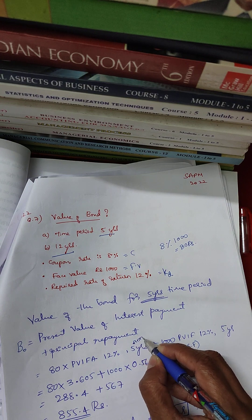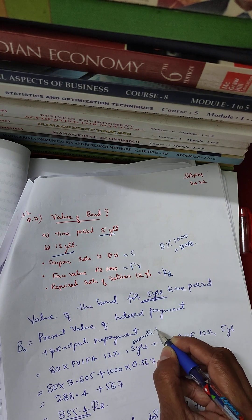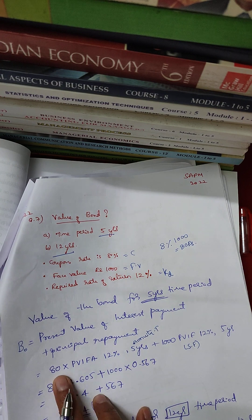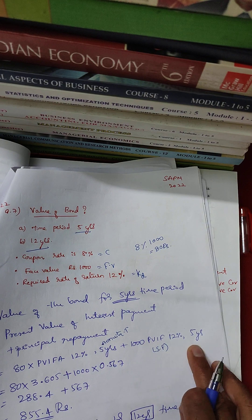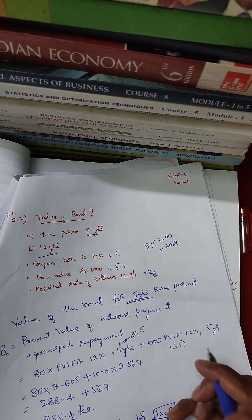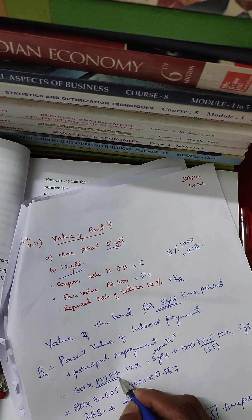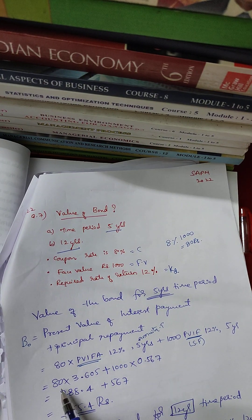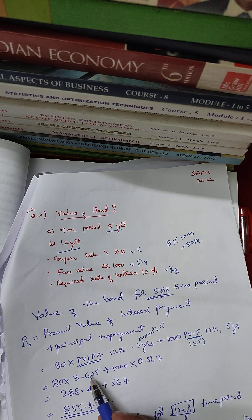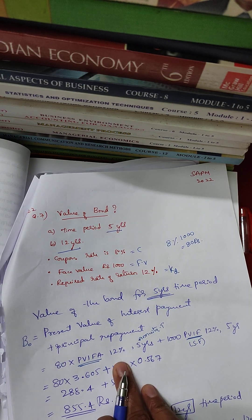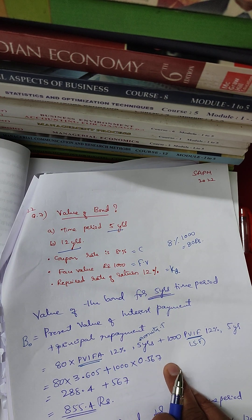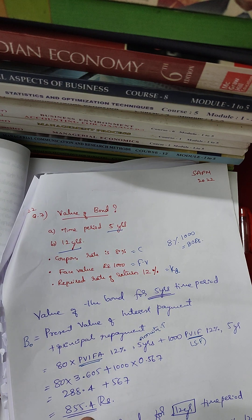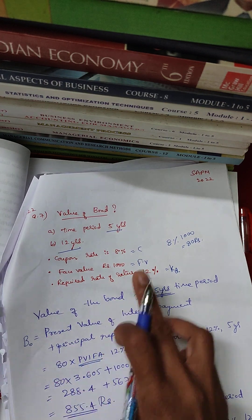So the coupon payment is 80 rupees. Since it is 5 years continuous, we will receive 80 rupees each year and 1,000 rupees at maturity — that is the face value at the end of 5 years. We use the annuity table for the coupon and a single factor for the principal. The single factor value is 0.56.